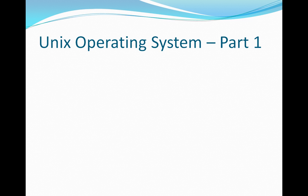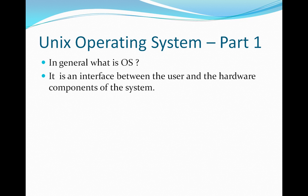What are the different operating systems we have in the present world? We have the Windows operating system, Mac operating system, Android operating system, Blackberry operating system, and different mobile operating systems. In the same way, UNIX is also an operating system.